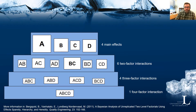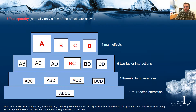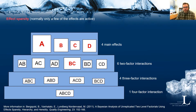First, the effect sparsity principle states that normally only a few of the effects are active. This is indicated here — let's say that these 5 effects are found to be active. The analysis of unreplicated designs rests on this assumption. For example, when we use a normal probability plot of the estimated effects and we try to decide which effects we consider to be active, this analysis is based on the fact that we normally do not have too many active effects. So the sparsity principle is acting on that analysis.